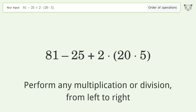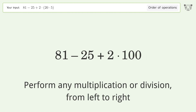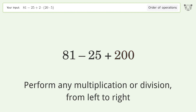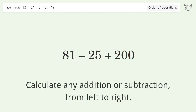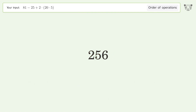Perform any multiplication or division from left to right: 20 times 5 equals 100, and 2 times 100 equals 200. Then calculate any addition or subtraction from left to right: 81 minus 25 equals 56, and 56 plus 200 equals 256. The final result is 256.